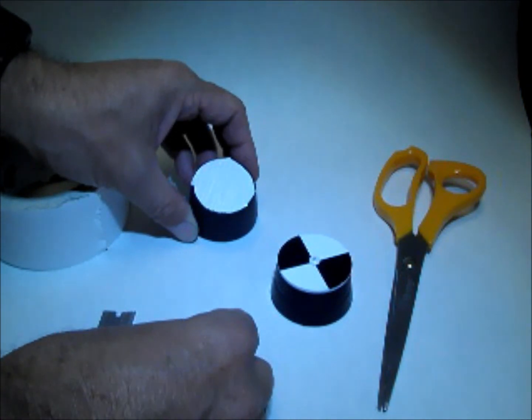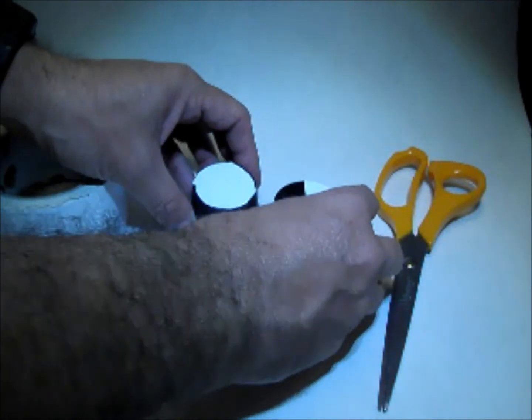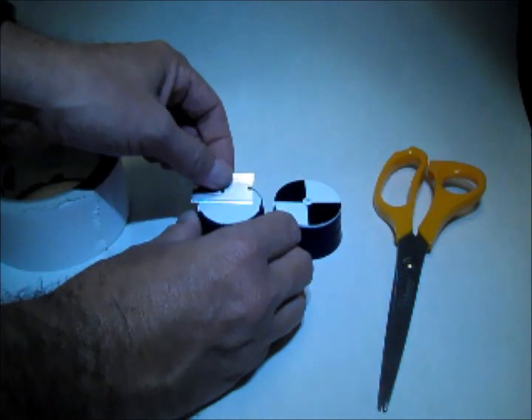Turn the stopper over to display the tape and using a razor blade, cut the tape into four equal pie-shaped pieces.